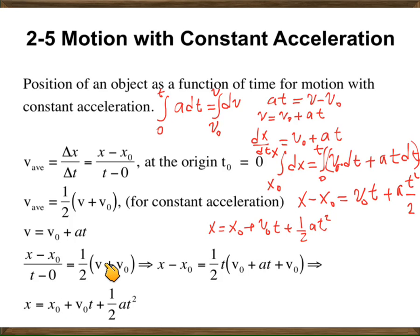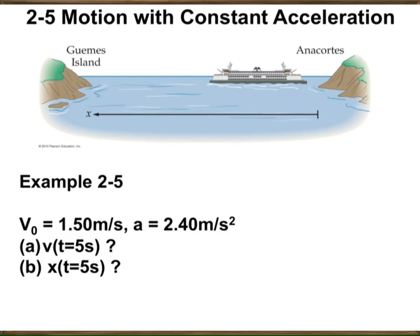We have derived the position versus time both by using algebraic expressions and by integration. So we now have everything: position x as a function of time, velocity v as a function of time, and a is always constant. Even with the simplest example, the first thing you should do is draw your coordinate system — pick an origin, draw the axis, and decide which direction is increasing and which is decreasing, because this affects the sign of a or v.